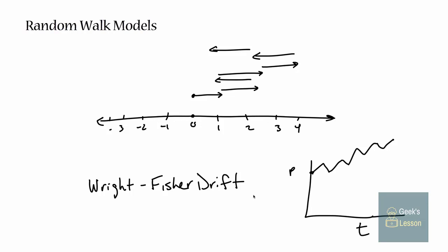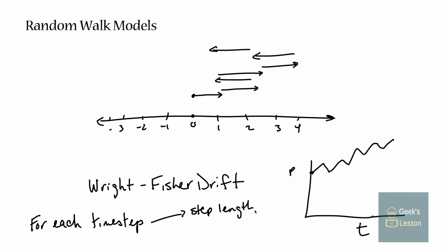These are both one-dimensional random walks, but you can use multidimensional random walks where your directions go beyond up and down - they could be left and right - to model things like foraging behavior and animal movement across the landscape. For each time step of a random walk, you need to choose step length - how far you're going to go - and the direction. In a more complicated random walk model, step direction might be north, south, east, west, or something fancy like that.